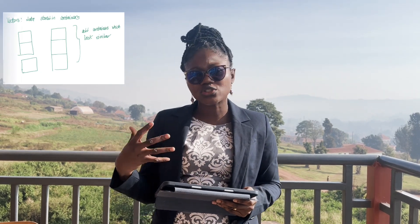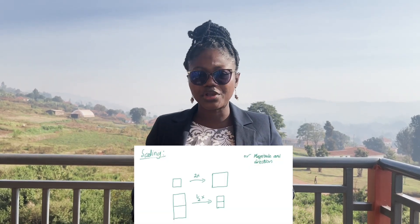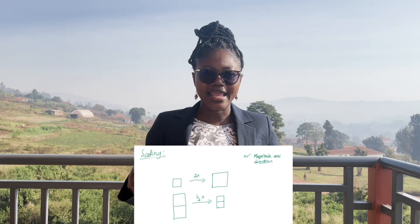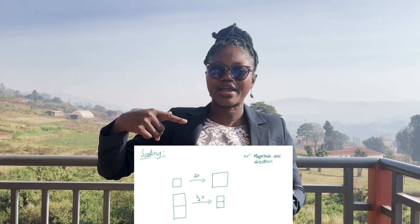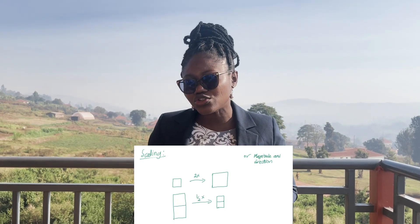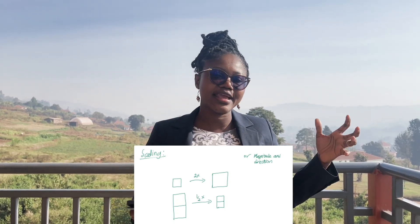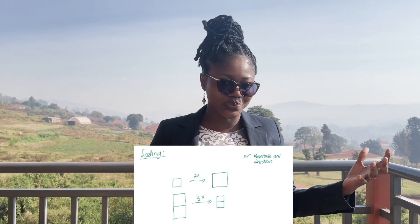If you have a container which stores the age of people and you want to compute twice their age, what you do is just scale their ages by two.